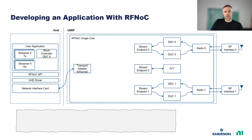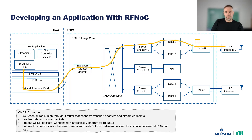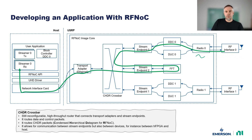Next, we need a means to route data between different stream endpoints. This is taken care of by the chatter crossbar, where chatter is the packet-based protocol used in RFNOC. The chatter crossbar is a component automatically added to the design by RFNOC tooling, so users don't need to instantiate it themselves. It is a router that connects stream endpoints with transport adapters and can route chatter packets between any of its connections. The routes are runtime software reconfigurable. For instance, time domain data received on radio zero can be routed through DDC zero directly to the host, or it can be routed to the FFT block and then to the host so that the host receives frequency domain data.